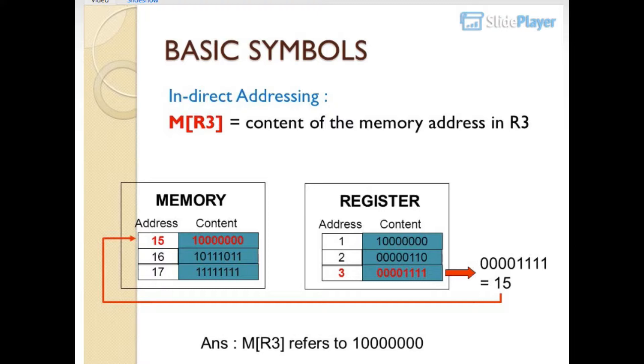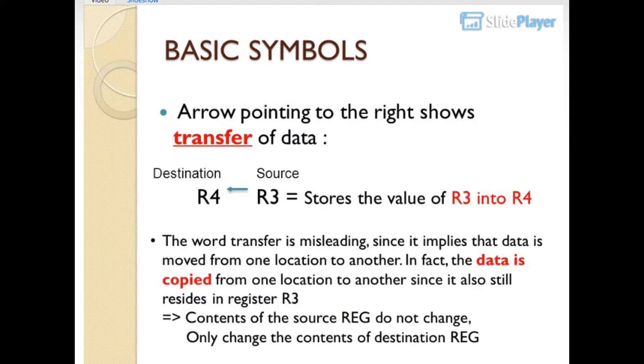Basic symbols: arrow pointing to the right shows transfer of data. R4 gets R3 stores the value of R3 into R4, destination gets source. The word transfer is misleading since it implies data is moved. In fact, the data is copied from one location to another since it also still resides in register R3.